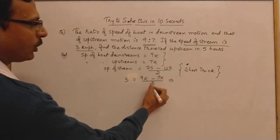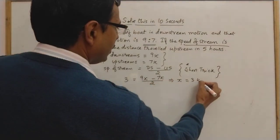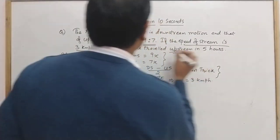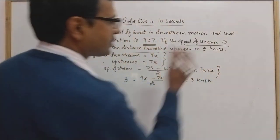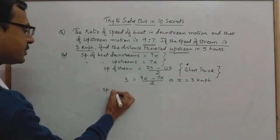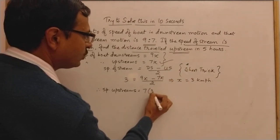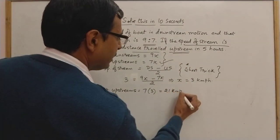From this we get 2x / 2, which means x = 3 kilometers per hour. Once we know the value of x, the simplification is very easy. We need only the upstream speed, since we have to find distance traveled upstream. Speed upstream = 7x = 7 × 3 = 21 kilometers per hour.